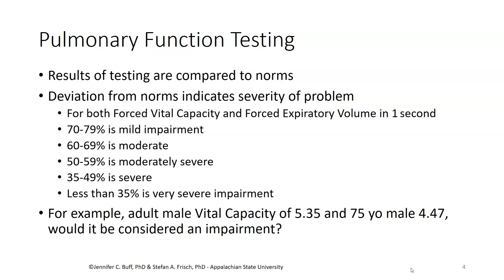Measures in pulmonary function testing are compared to norms. Deviation from norms indicates the severity of a problem. For example, for both forced vital capacity and forced expiratory volume in one second, something below 80% is considered an impairment. Below 70% is a moderate impairment. Below 50% starts to become severe. And below 35% is considered a very severe impairment.